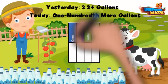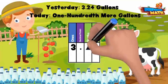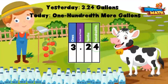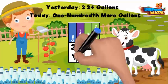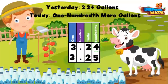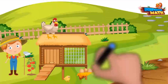When we are working on hundredths more or hundredths less, we really need to look at the hundredths place in the number. If something is one hundredth more, it means the hundredths place is going to change by one. Here we have a four in the hundredths place — one hundredth more is going to push that four up to a five. One hundredth more than 3.24 is 3.25. Thanks for making all that milk, Betsy!